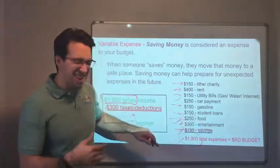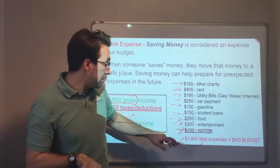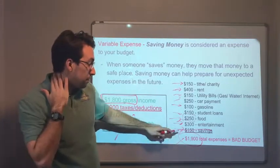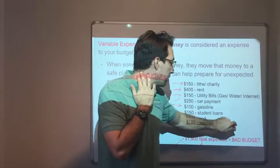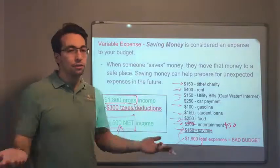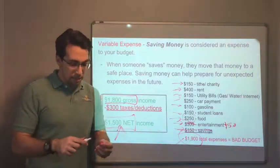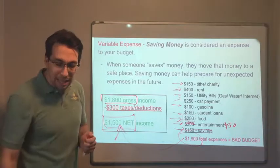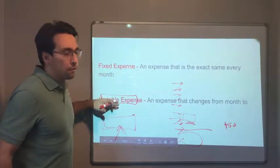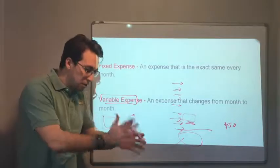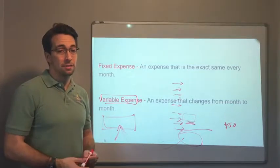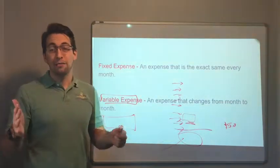To fix the budget, we could skip saving this month — though that's not ideal — and cut entertainment down to $50. That saves $400 and brings the budget into balance. The key takeaways from this lesson: a fixed expense is predictable and consistent, while a variable expense is inconsistent and unpredictable — it changes. Have a great day and we'll see you next time.